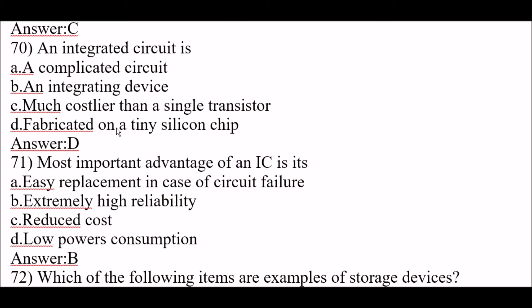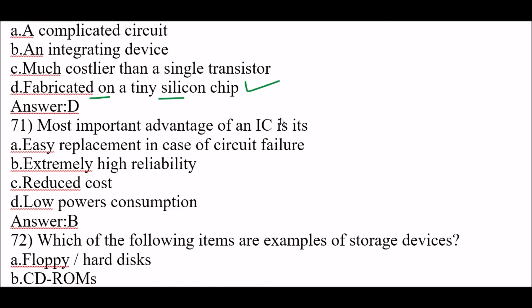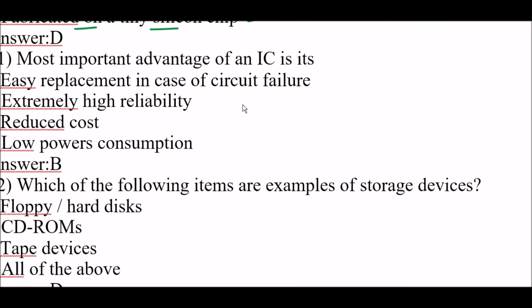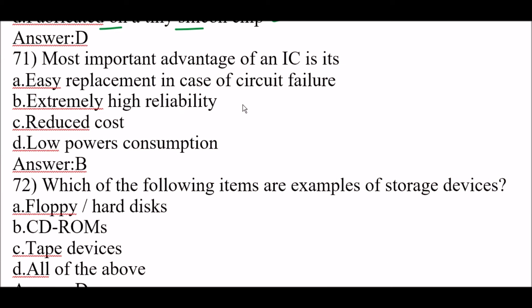Next question: an integrated circuit is option D, fabricated on a tiny silicon chip. Next question: the most important advantage of an IC is option B, its extremely high reliability. The most important advantage of an IC circuit is its extremely high reliability.